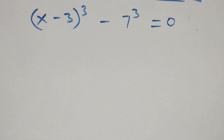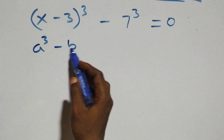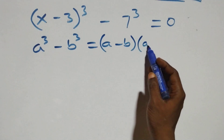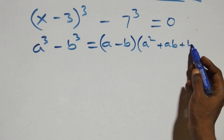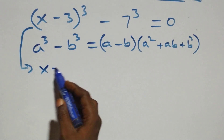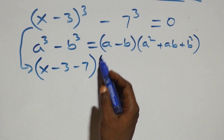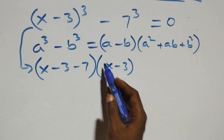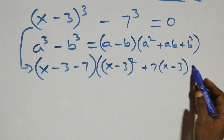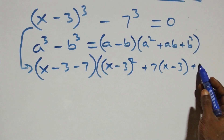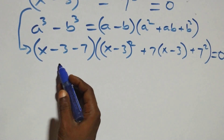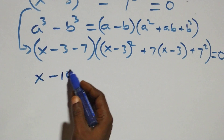Moving to the second case, this follows the difference of cubes formula: a^3 minus b^3 equals (a minus b)(a^2 plus ab plus b^2). Applying this, we get (x minus 3 minus 7) times [(x minus 3)^2 plus 7(x minus 3) plus 7^2] equals 0.